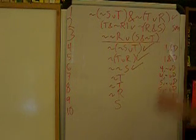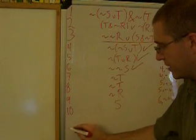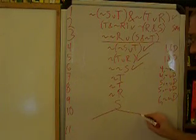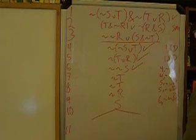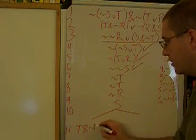Now we're going to decompose. We're going to go to line 2 and decompose the next step. So for line 11, we'll skip down just a little ways. On line 11 we have T and not R.